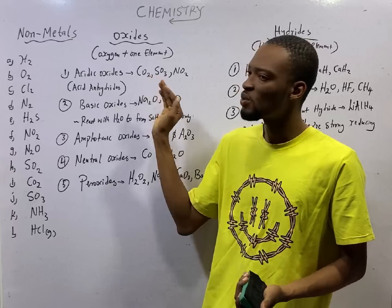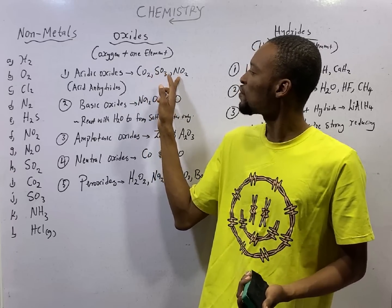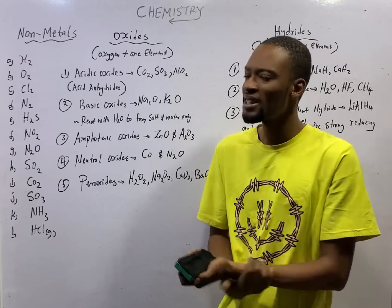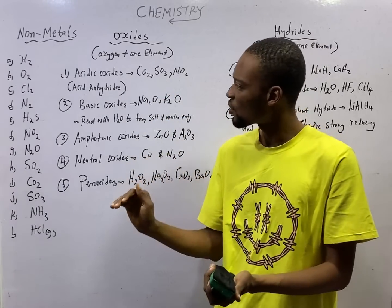Sulfur dioxide, oxygen with sulfur, sulfur is a non-metal. Nitrogen-4 oxide, oxygen with nitrogen, which is a non-metal. Non-metals generally form acidic oxides.